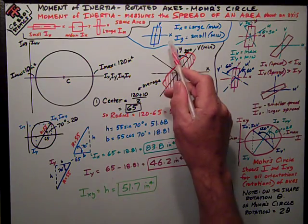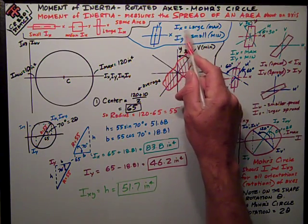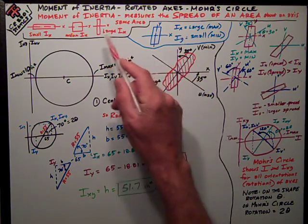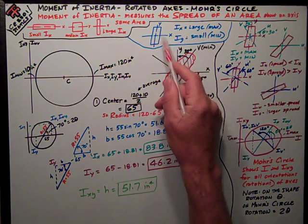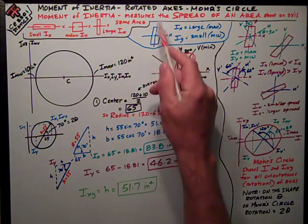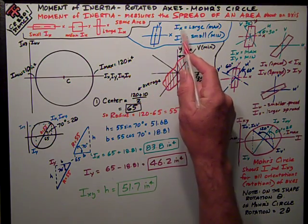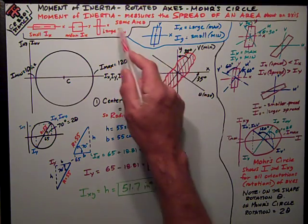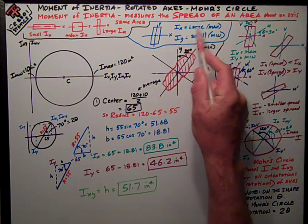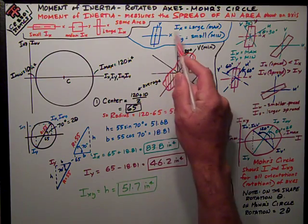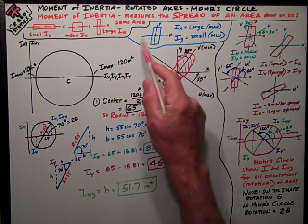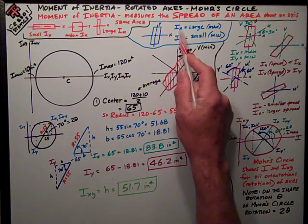Then in blue I've got here the same rectangle, but with the x-axis and the y-axis vertically. And you can see the spread about the x-axis, just like this example in red here, is large. In fact, it's the maximum moment of inertia, the moment of inertia about the x-axis.